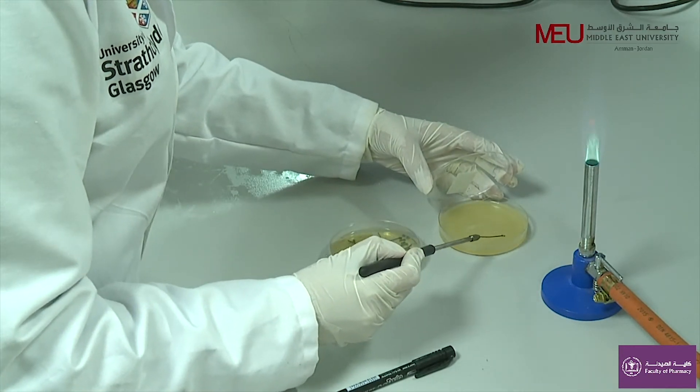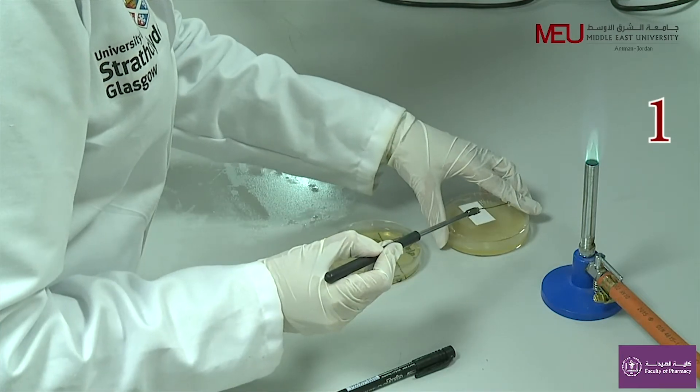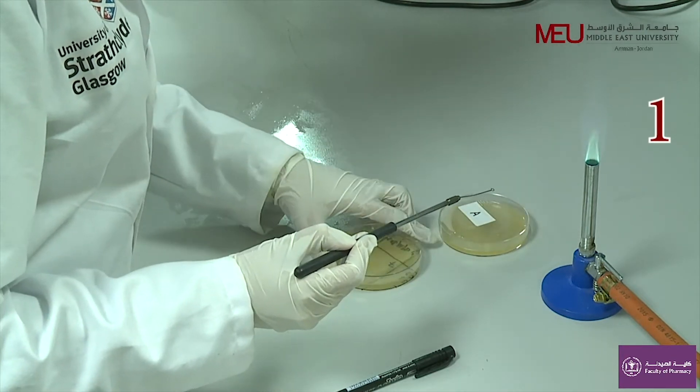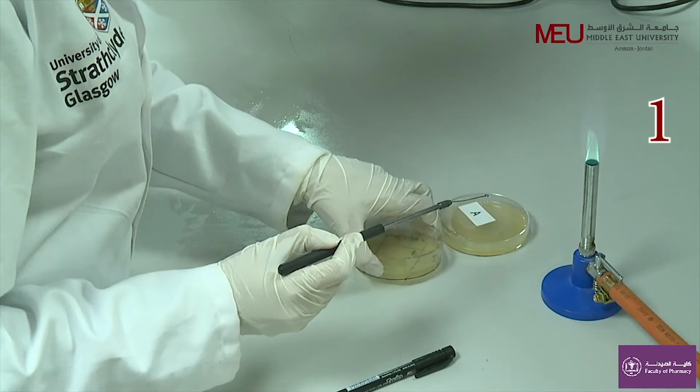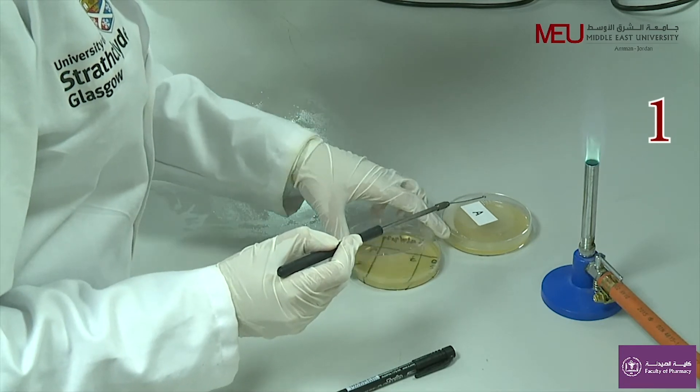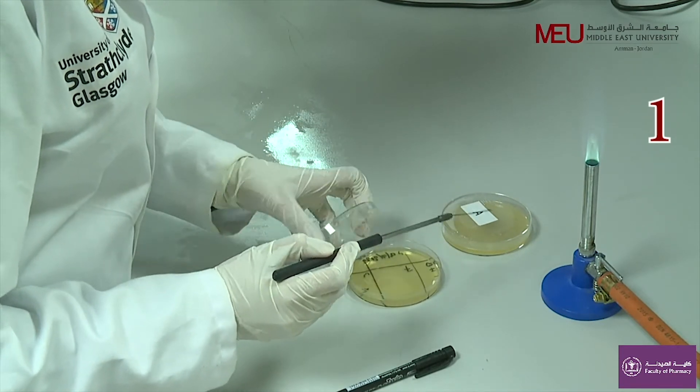Obtain a loopful of the mixed culture from the original sample, but be sure to use aseptic transfer technique by sterilizing the inoculating loop. Streak the inoculum into the first quadrant as shown in the video.